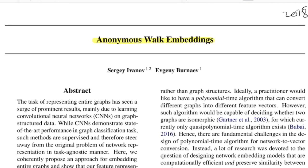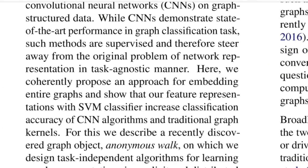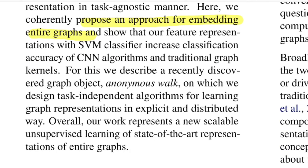At a very high level, the paper introduces the idea of embedding entire graphs, which was again one of the objectives of the previous paper I explained, titled Graph2Vec. If you haven't watched that video yet, I'll put it in the i button — check that out after this. So let's start with the abstract. They propose an approach for embedding entire graphs by defining something called an Anonymous Walk, which is a graph object such as nodes and subgraphs, on which they apply task-independent algorithms for learning graph representations. In DeepWalk and Node2Vec, you considered Random Walk to be the graph object, whereas in Graph2Vec they considered rooted subgraph. Here we are talking about Anonymous Walk.